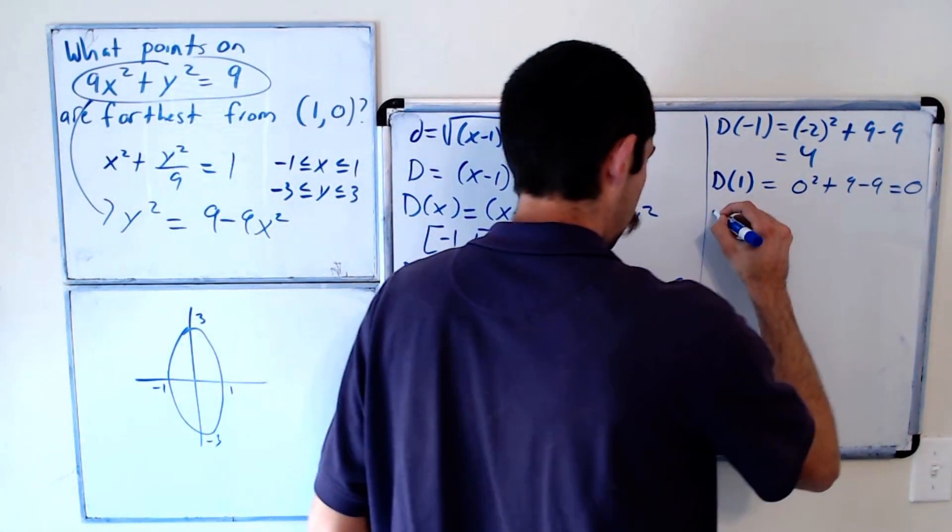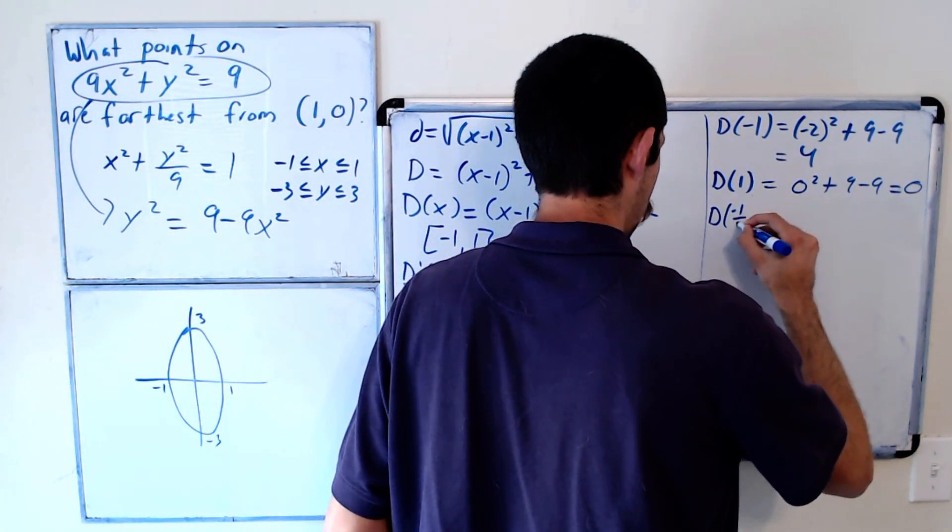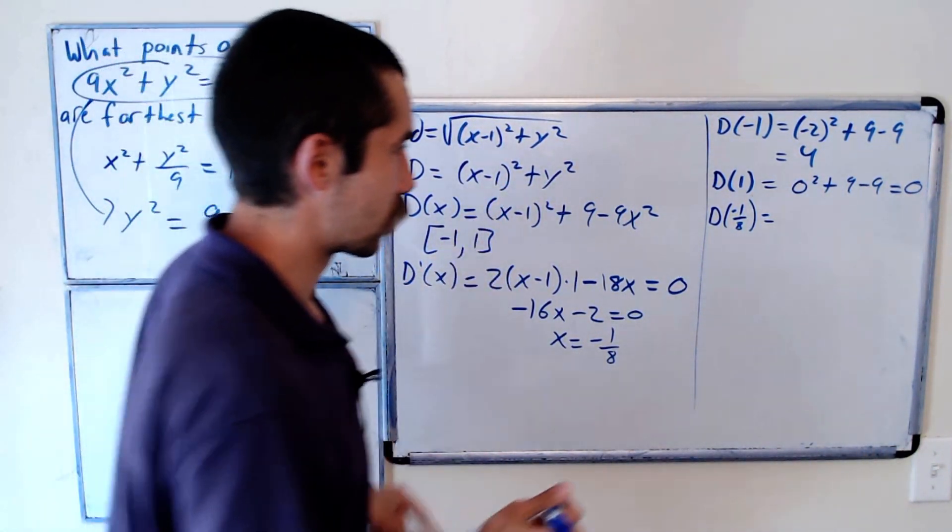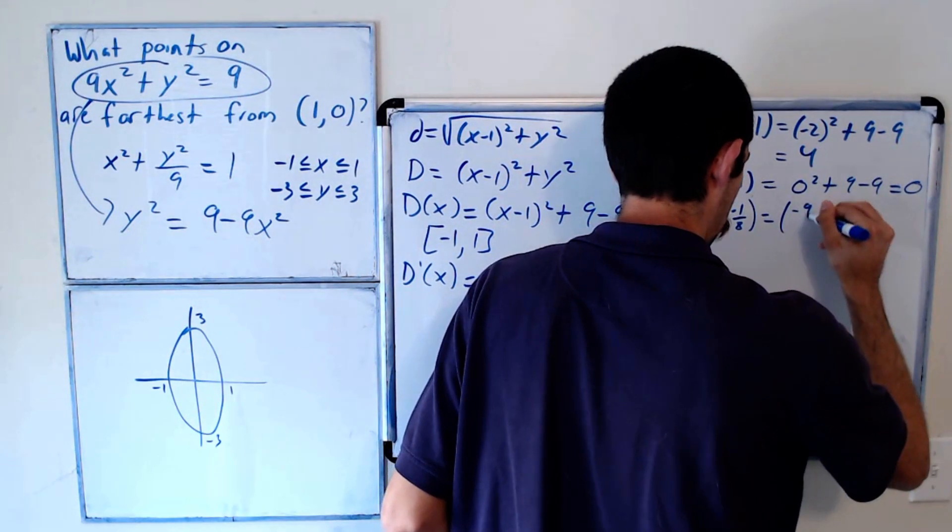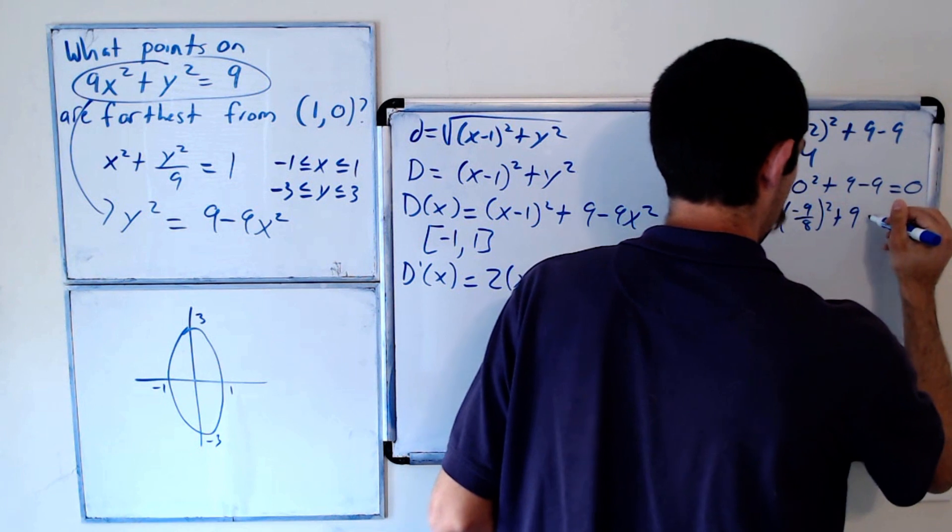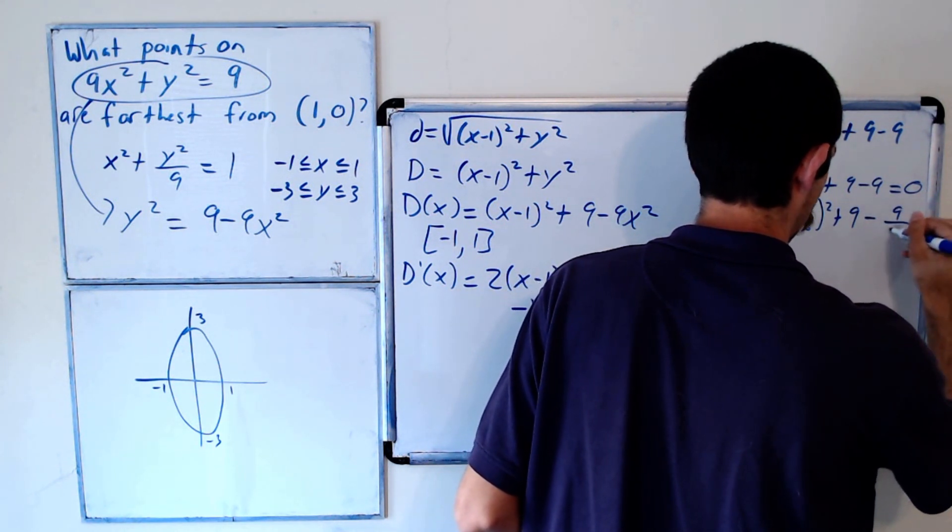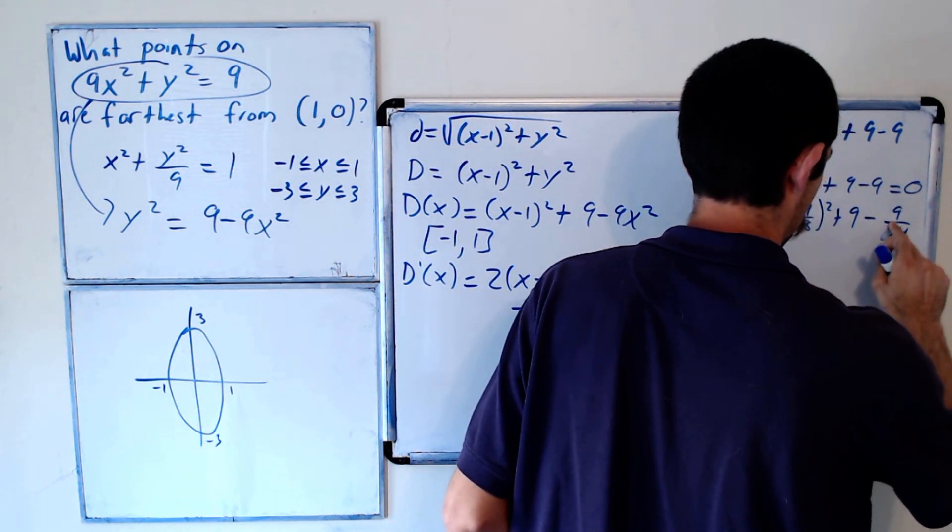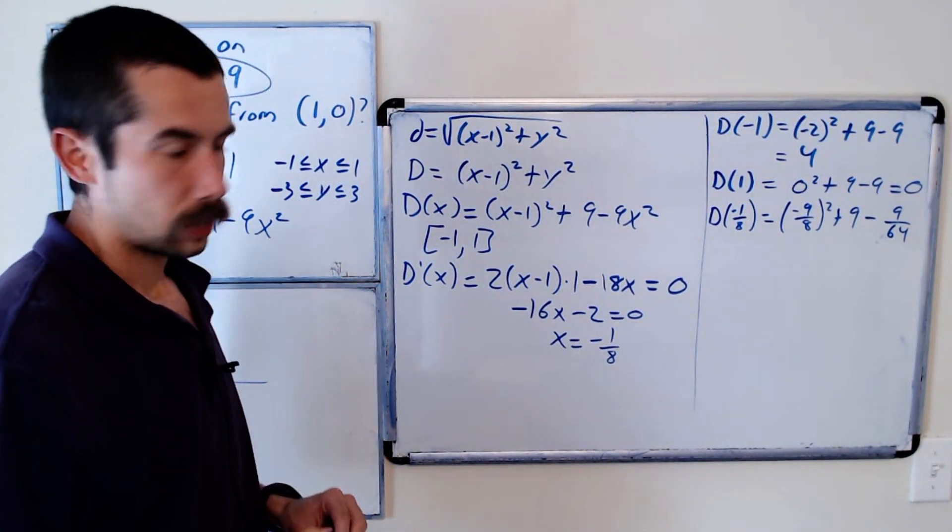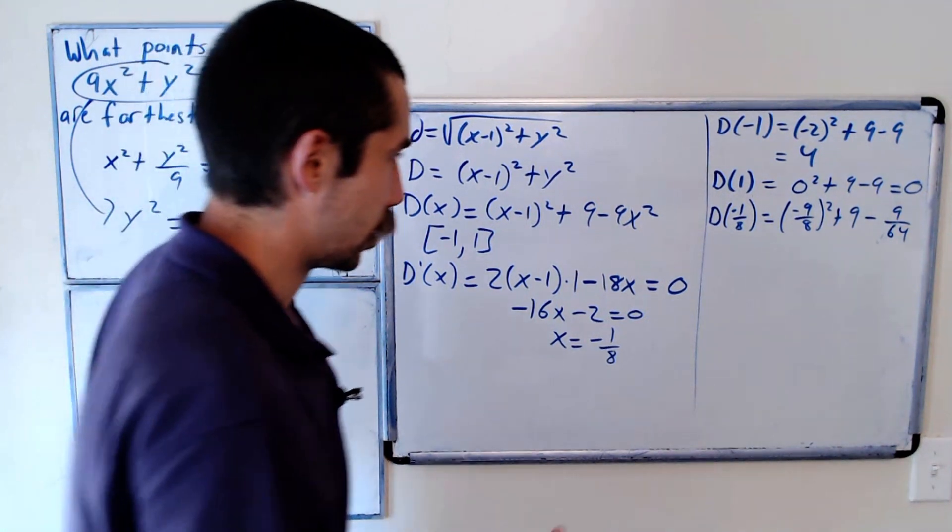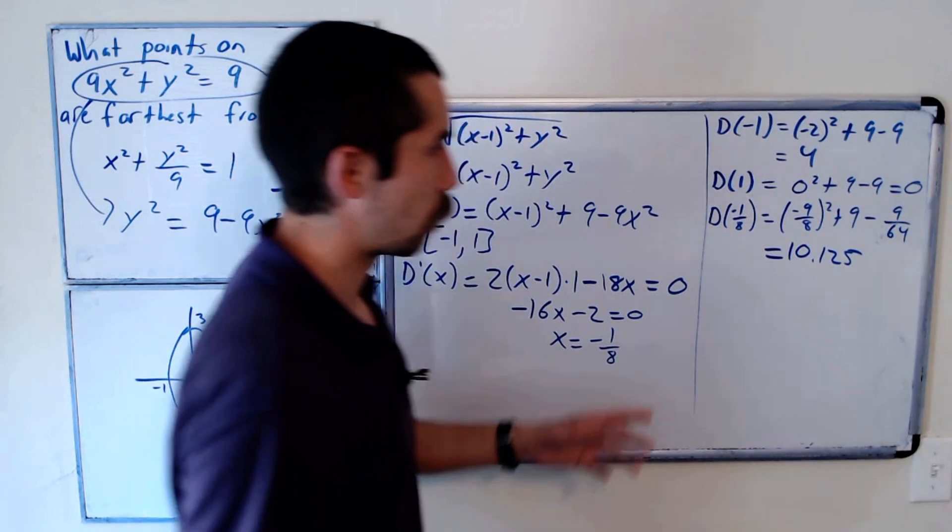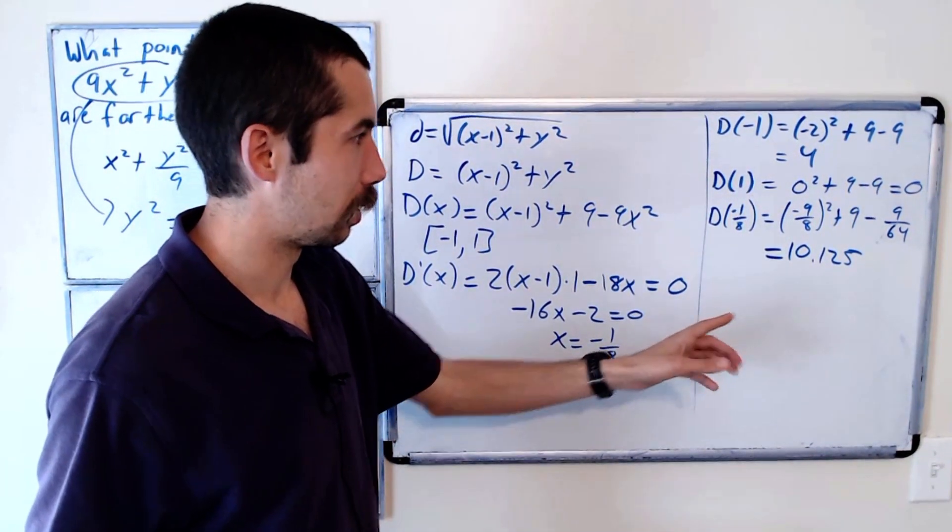And then last, D of negative 1 eighth is when we plug that in, we get negative 9 eighths squared plus 9 minus 9 over 64, which simplifies to 10.125. So we look for the largest value here, which is 10.125.